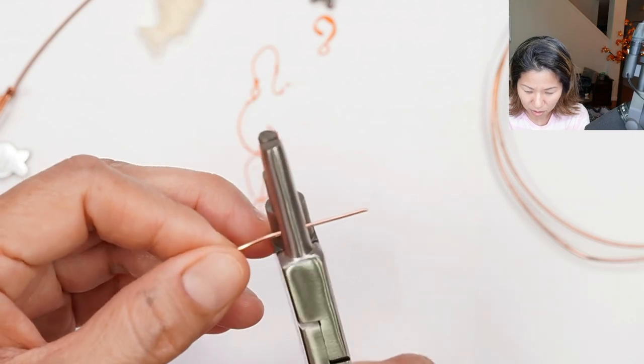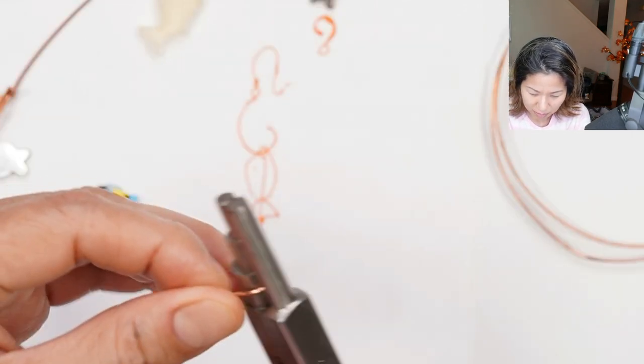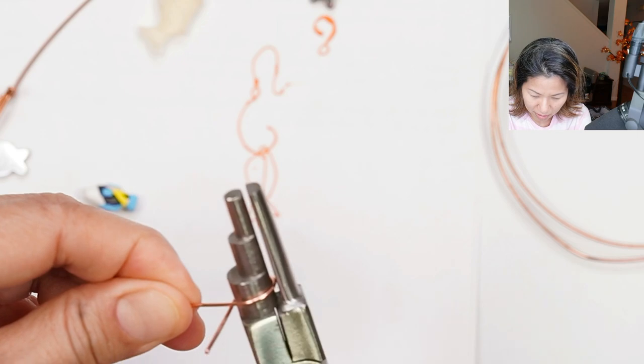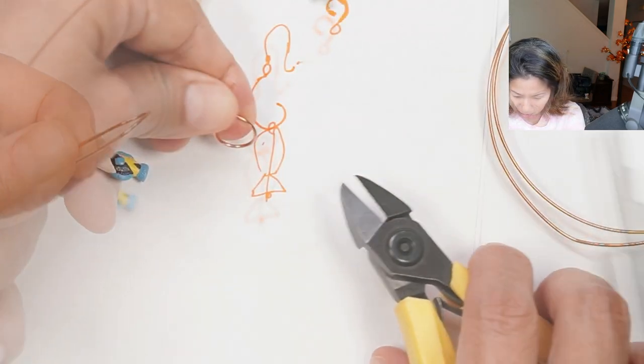Here I'm using my three-step wrap and tap plier and I'm making the loop about the same size as my drawing which is going to be the hook.